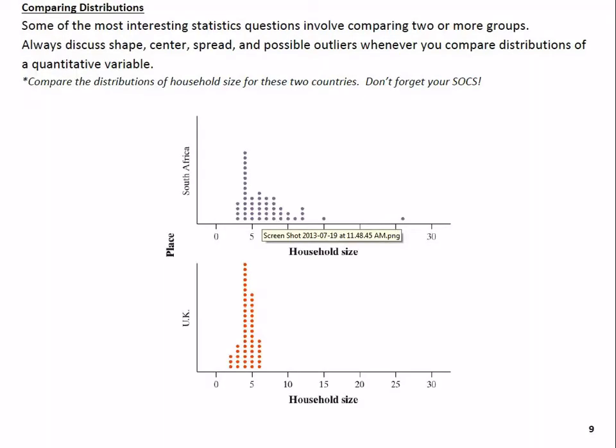Let's go to the next piece here. It says comparing distributions. Some of the most interesting statistics questions involve comparing two or more groups. Always discuss shape, center, spread, and possible outliers whenever you compare distributions of a quantitative variable. In the little star here, it says compare the distributions of household size for these two countries. You have to ignore this screenshot thing that came up on my computer, but you can trust that they're on the same exact x-axis.